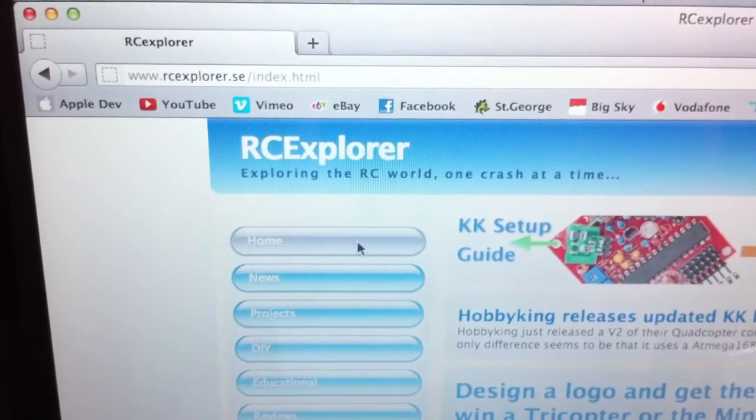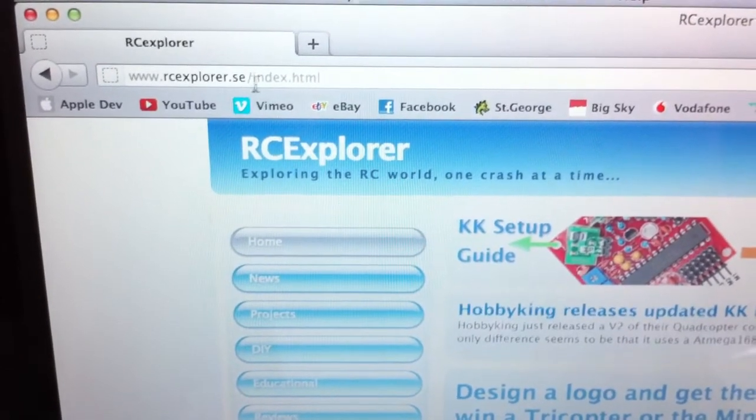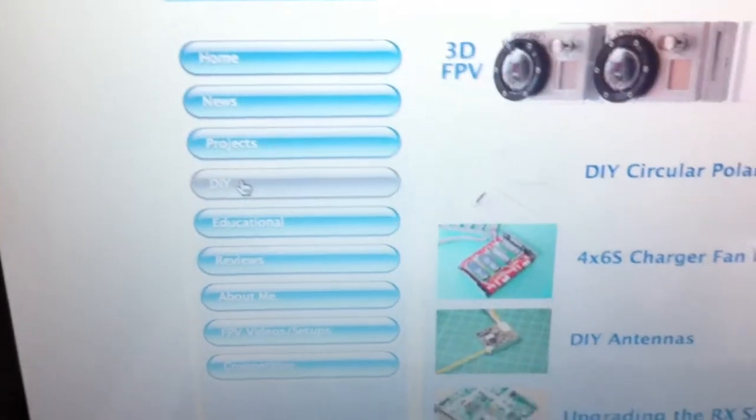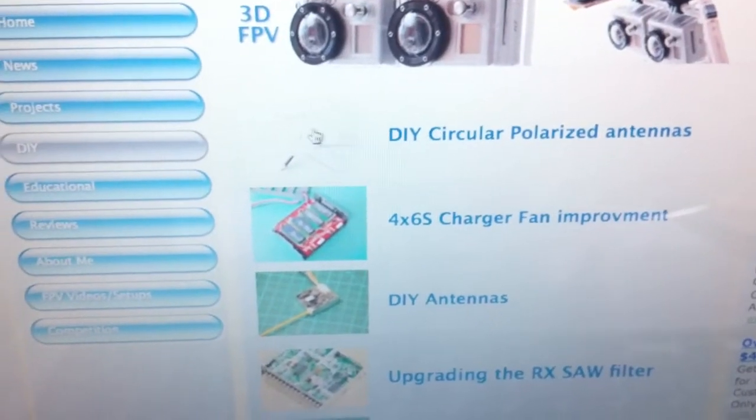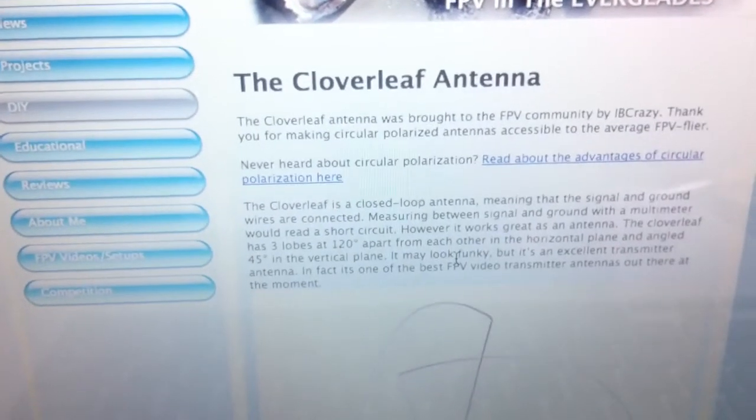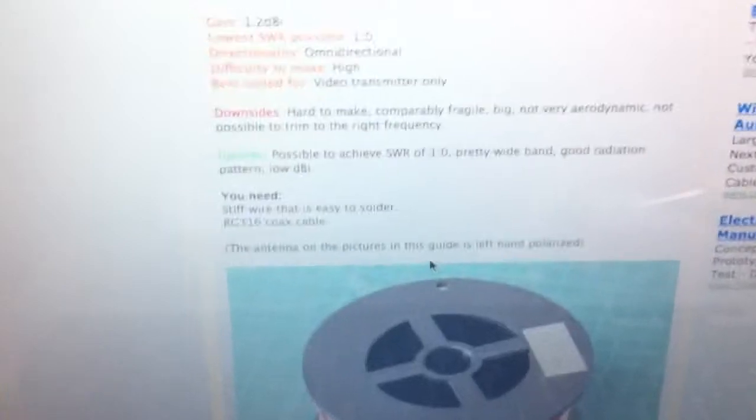What I did forget to mention is you need to get this information from the rcexplorer.se website. And this is David's website. What you need to do is firstly click on the DIY link. And once you click on that, go to DIY Circular Polarized Antenna. My son actually found this website. Great information here. Click on the Cloverleaf antenna. And then take your time to actually read through this page. It's got some really great information there.